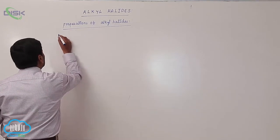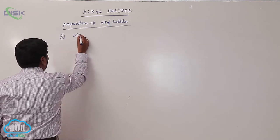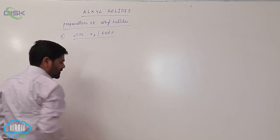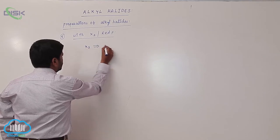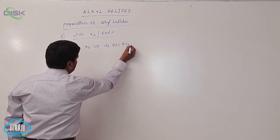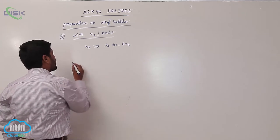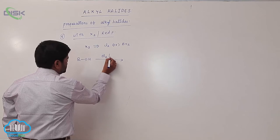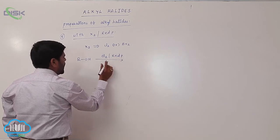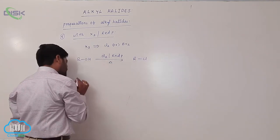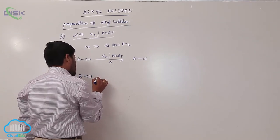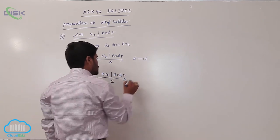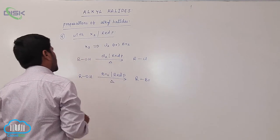The fifth reaction is with a halogen in the presence of red phosphorus, where X₂ equals Cl₂ or Br₂. When an alcohol reacts with chlorine in the presence of red phosphorus, it forms alkyl chloride. When an alcohol reacts with bromine in the presence of red phosphorus, it forms alkyl bromide.